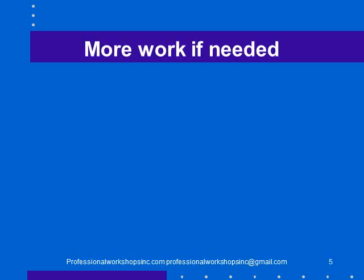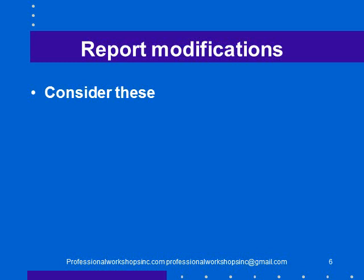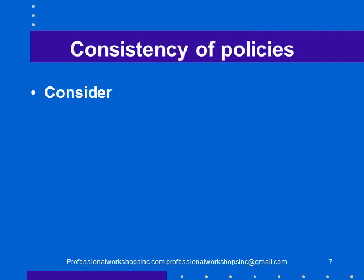If the auditor last year had modified their report — a qualification, an adverse opinion, or a denial — we need to consider whether that carried forward or whether the problem had been resolved this year. We need to consider whether we needed to refer to that in our audit opinion this year. If there was a modification, there are a number of things we need to consider, including the consistency of accounting policies, whether they are appropriate, and whether they have been applied consistently.